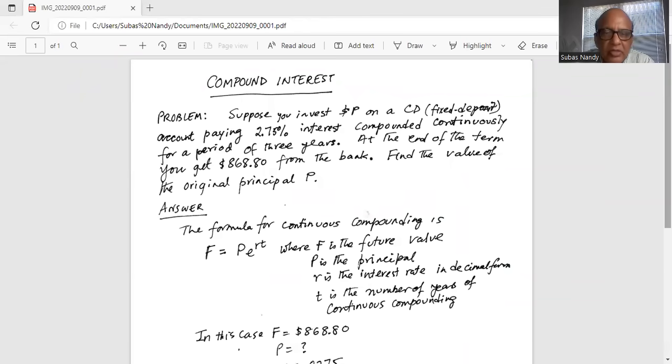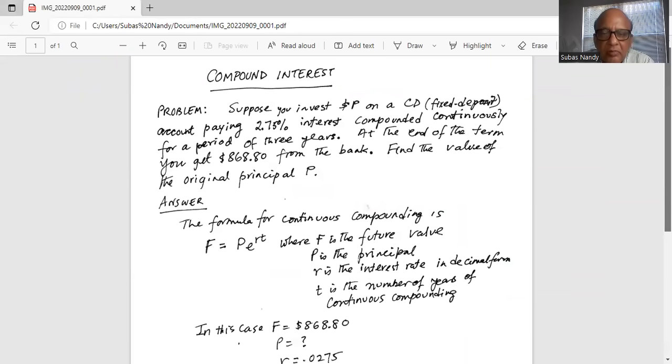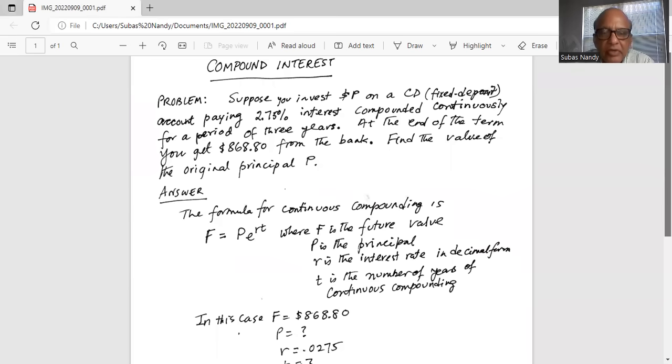Find the value of the original principal P. The formula for continuous compounding is F equals P multiplied by e, the natural number,